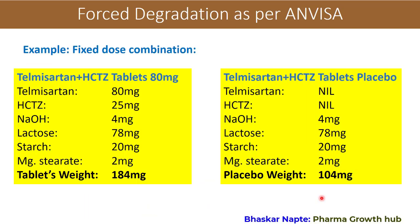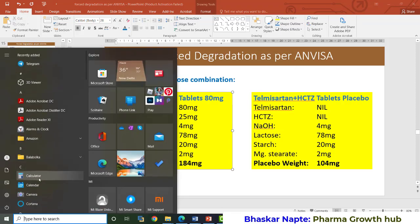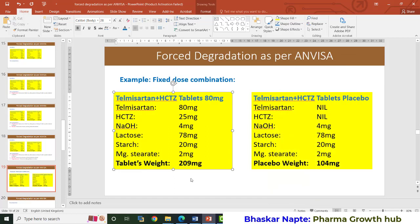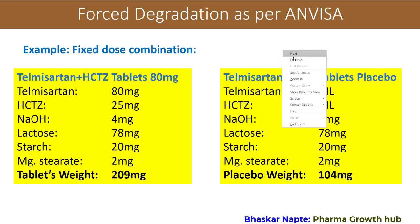The second example is a fixed-dose combination: Telmisartan plus hydrochlorothiazide (HCTZ), with label claims of 80 mg Telmisartan and 25 mg hydrochlorothiazide. The corrected tablet weight is 209 mg — that is 184 mg plus 25 mg for hydrochlorothiazide. The placebo weight remains 104 mg since it contains no active drug substance.